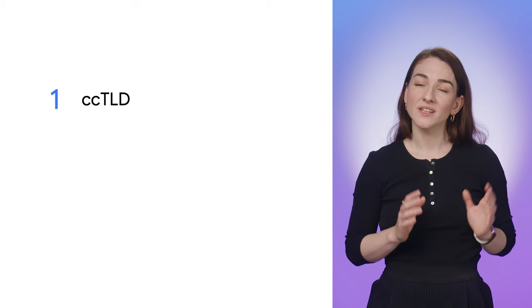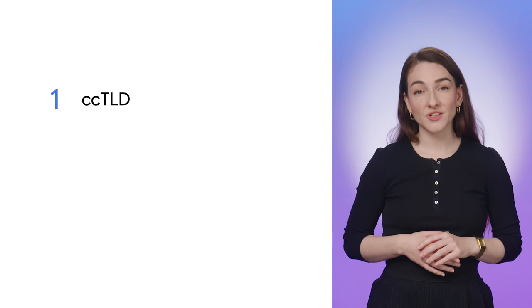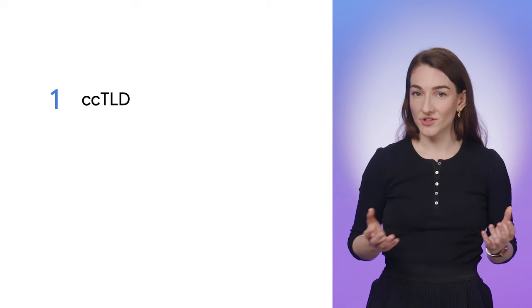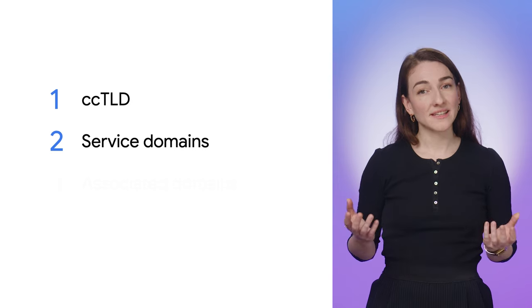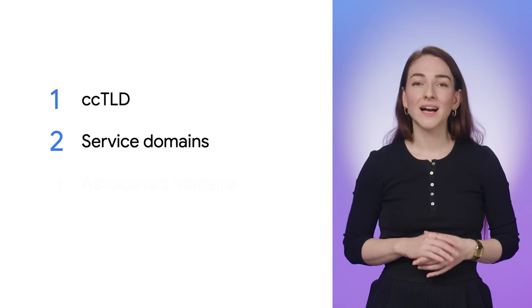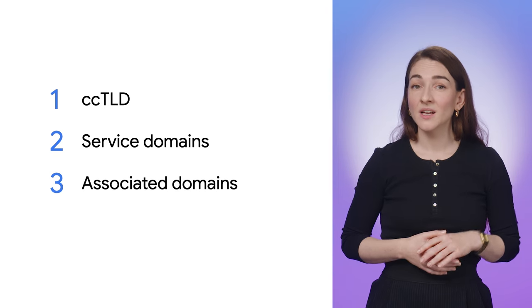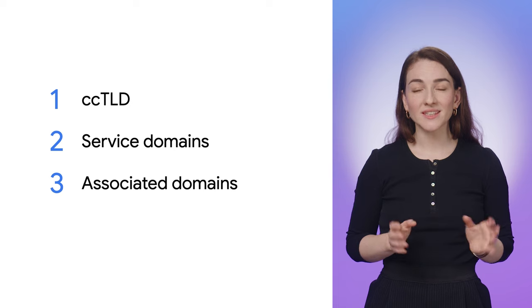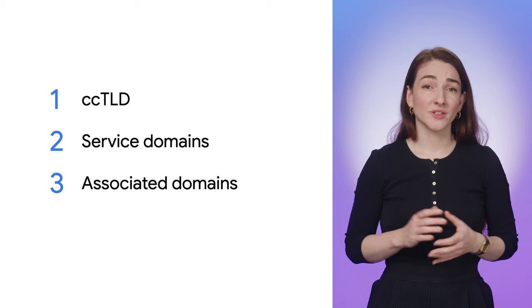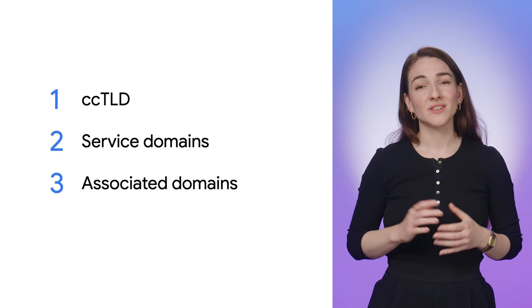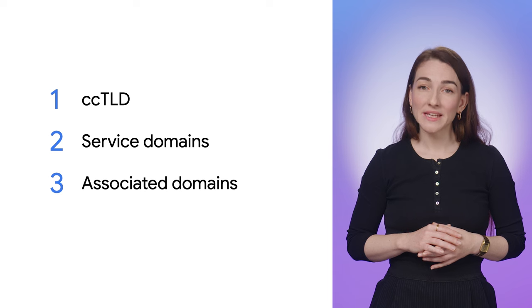Types of subsets are categorized by specific use cases related to website functionality. Country code top-level domain, or ccTLD subsets, are for variations for particular countries or geographical areas. Service domain subsets are for utility or sandbox domains. Associated domain subsets are more flexible and cover domains whose affiliation with the set primary is clearly presented to users. Set members could include a range of different domain types, which must meet the requirements of subsets based on a use case.